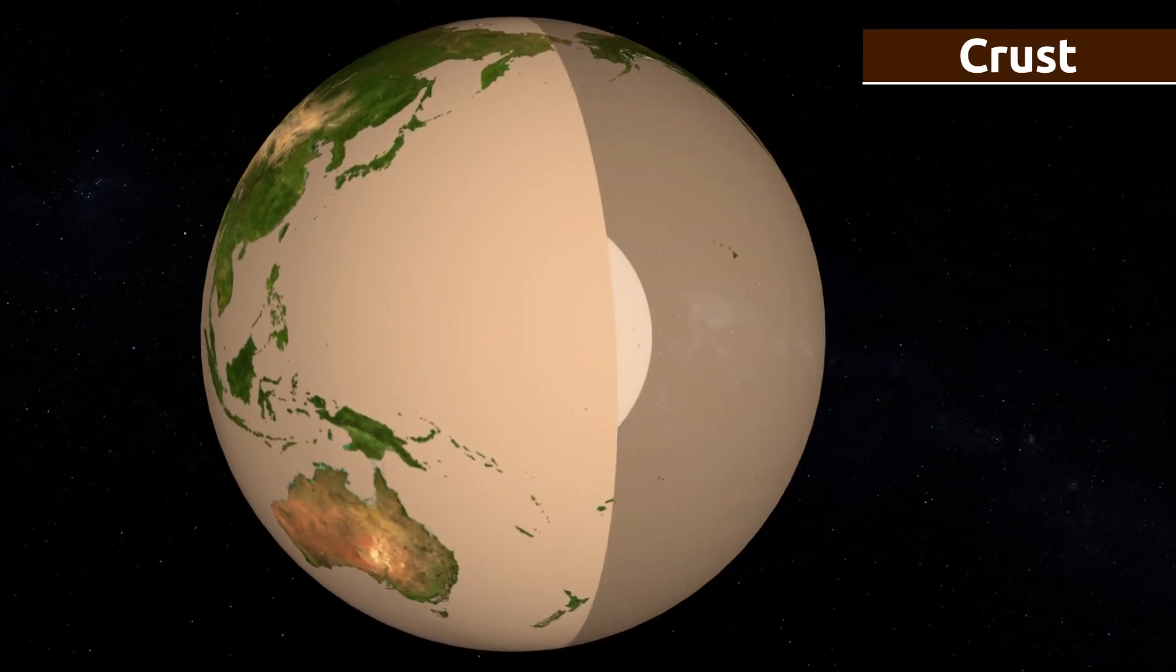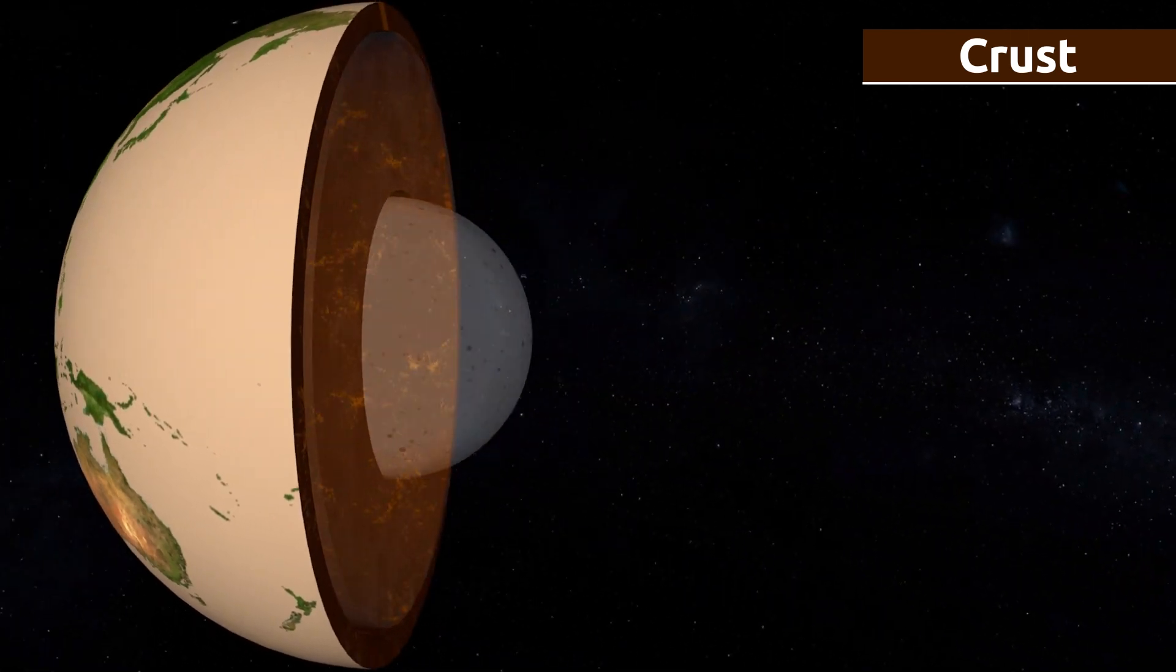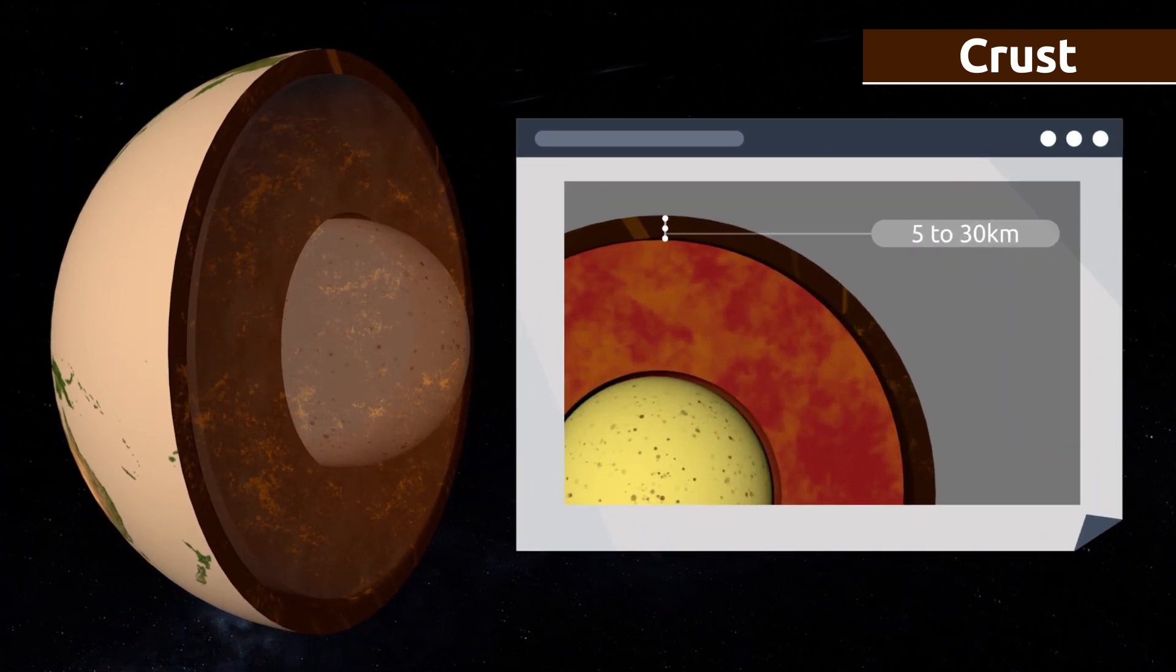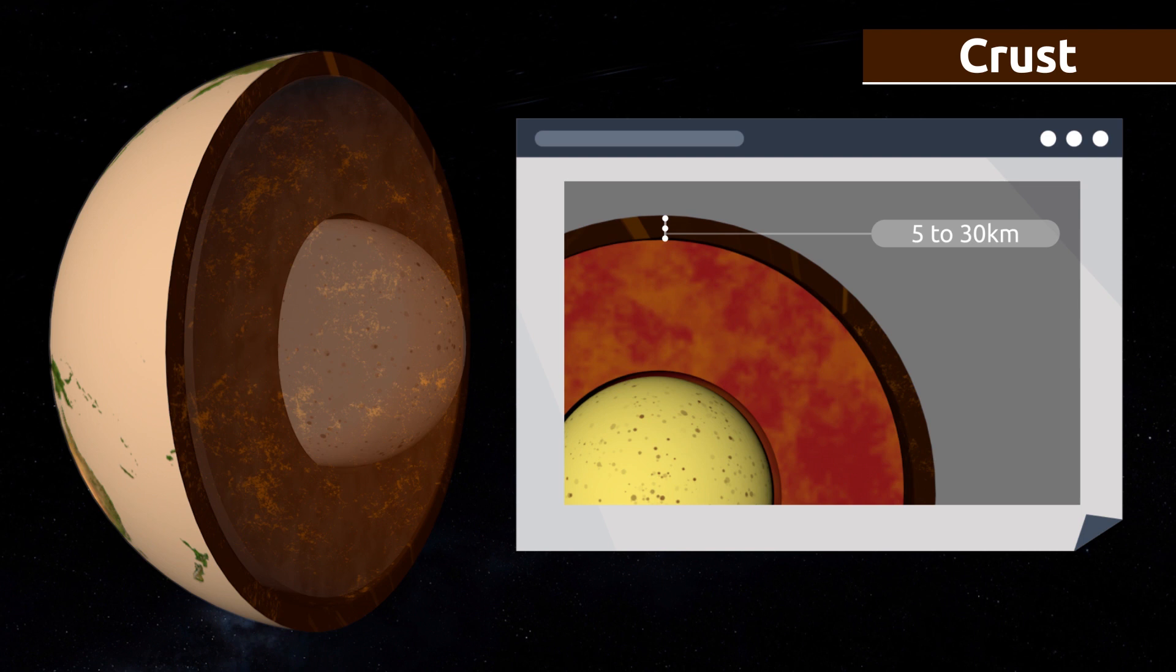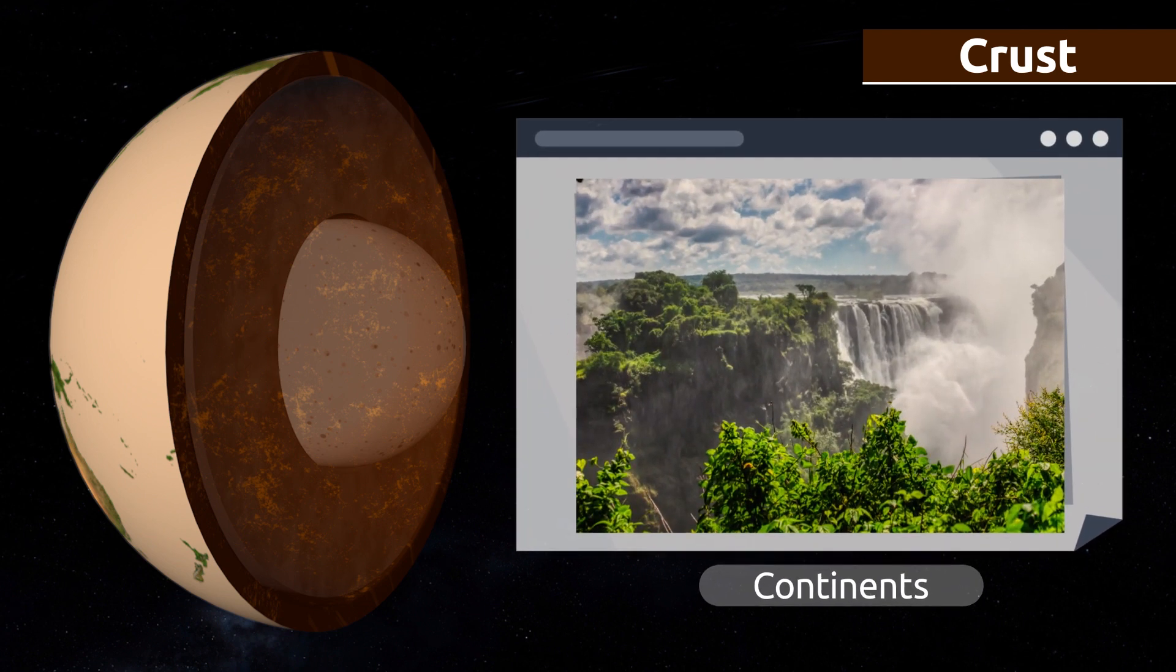The crust is the thinnest outermost layer of the geosphere. The thickness of the crust varies from 5 to 30 kilometers depending on where you are on Earth. The crust is made up of continents and the bottoms of the oceans.